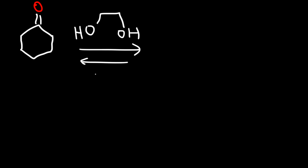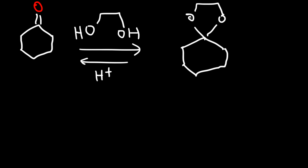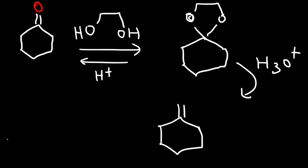Now let's go over the next reaction. If we have cyclohexanone and we react it with ethylene glycol, what's going to happen? In the previous examples, mixing an aldehyde or ketone with one alcohol molecule gave a hemiacetal, and with two alcohol molecules gave an acetal. Ethylene glycol is one molecule but with two alcohol functional groups, so we're going to get a cyclic acetal. We have two OR groups connected to each other. This reaction is useful as a protecting group, and we can remove it by reacting with H3O+, which regenerates the ketone.